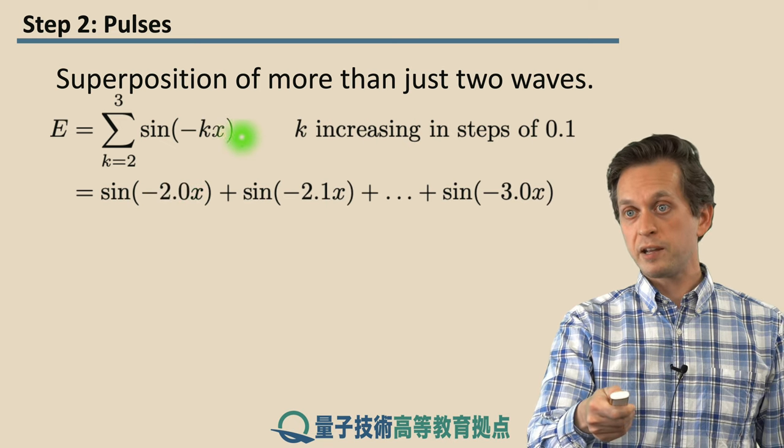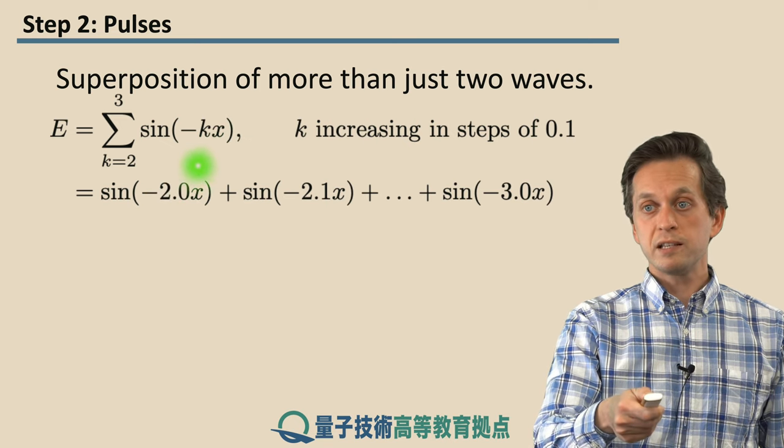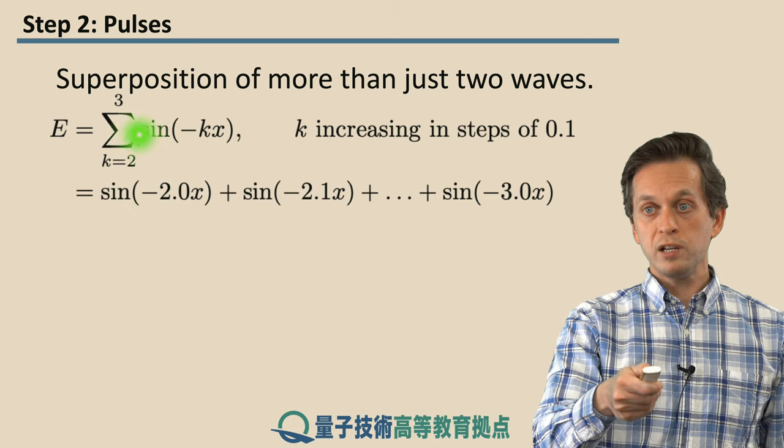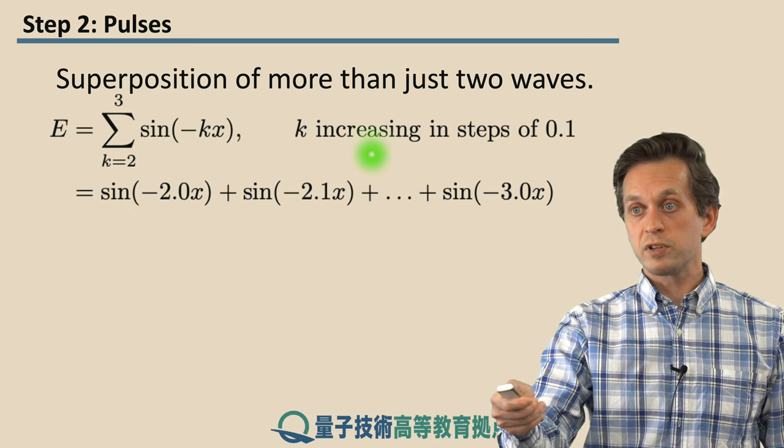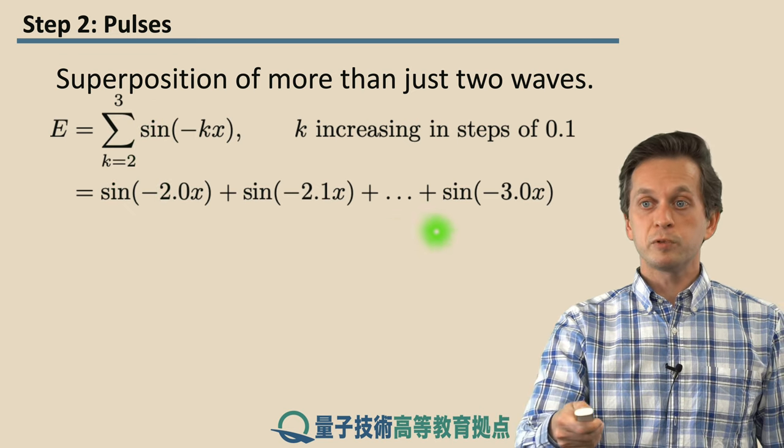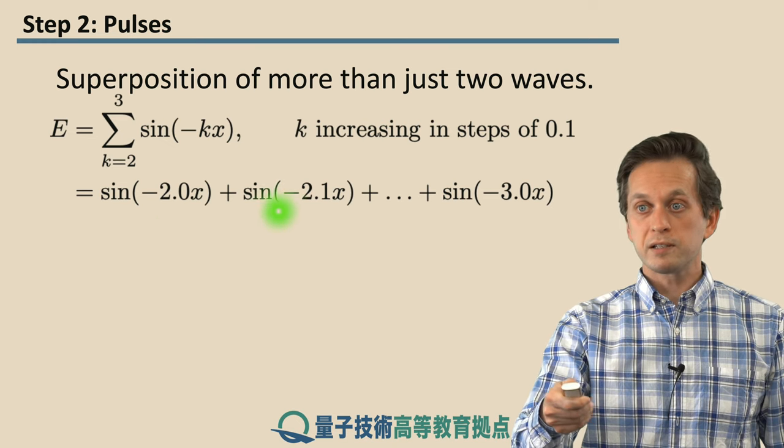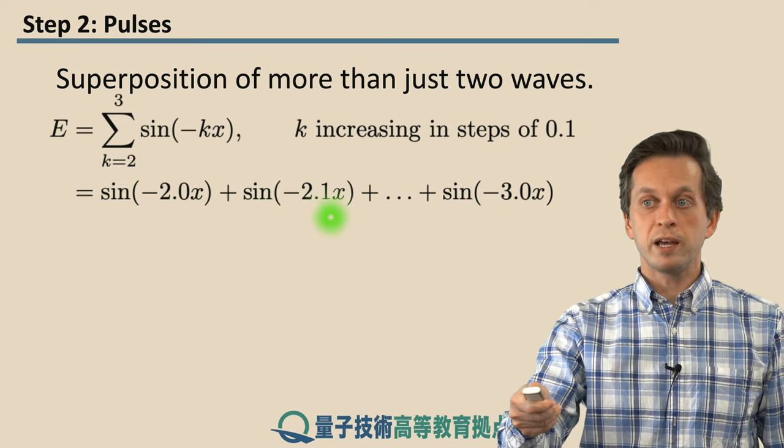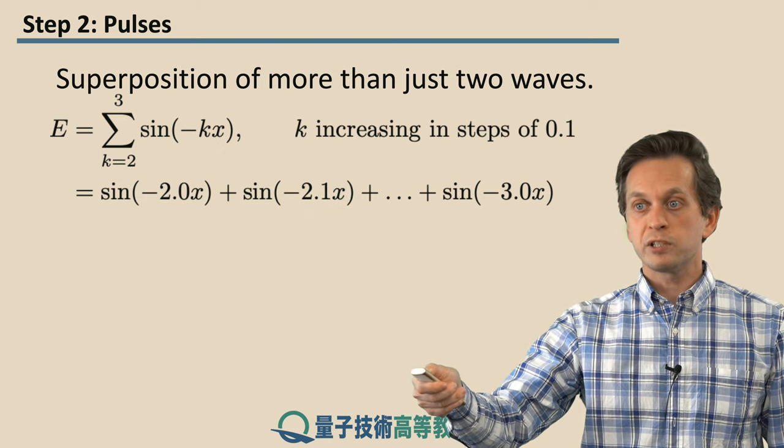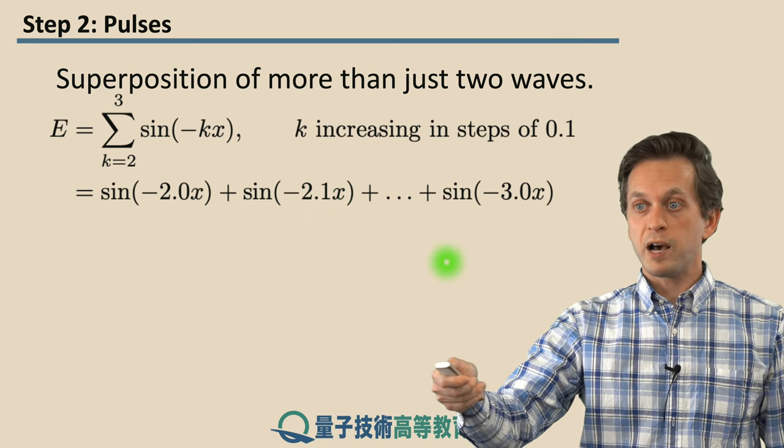So we only have sine of minus kx, where this k varies from 2 to 3 in steps of 0.1. So really what we have is a sum of sine of minus 2x plus sine of minus 2.1x and so on until we reach the 11th term of sine minus 3x.